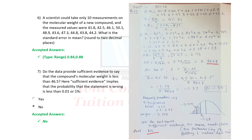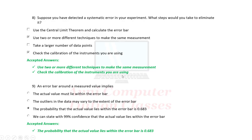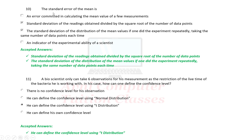Suppose you have detected a systematic error in your experiment — what steps would you take to eliminate it? Use two or more different techniques to make the same measurement, and check the calibration of the instruments you are using. An error bar around a measured value implies the probability that the actual value lies within the error bar is 0.68. The standard error of the mean is the standard deviation of the readings divided by the square root of the number of data points — the standard deviation of the distribution of mean values if one did the experiment repeatedly.